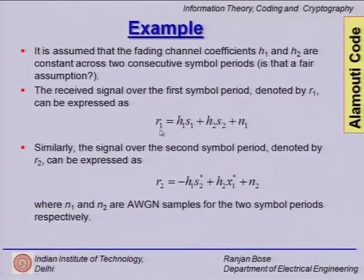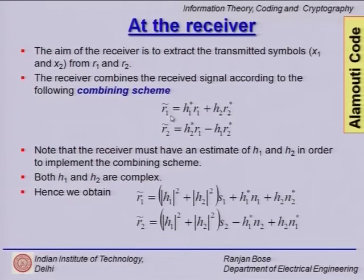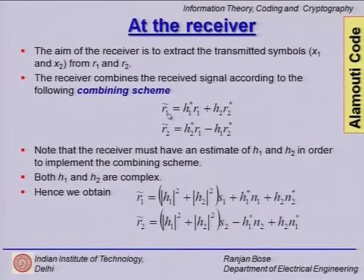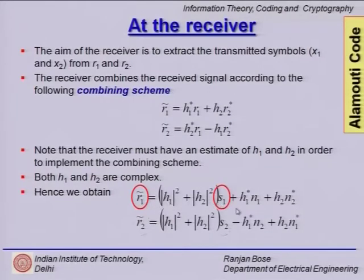The observation is that R1 depends both on S1 and S2, and R2 also depends on S2 and S1 simultaneously. But we have an interesting combining scheme wherein R1_tilde = H1*·R1 + H2·R2*, which means that if we have knowledge of the channel gains H1 and H2, we can use this combining scheme to get R1_tilde and similarly R2_tilde. Working this out, R1_tilde comes out to depend only on S1, and R2_tilde depends only on S2. With this combining scheme we have been able to decouple the decoding.